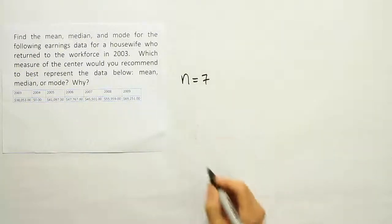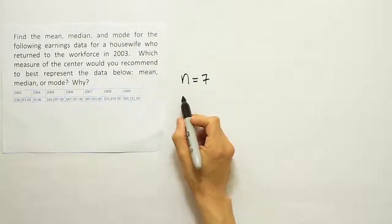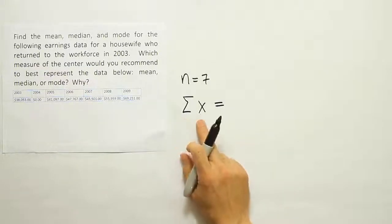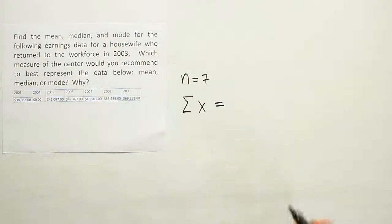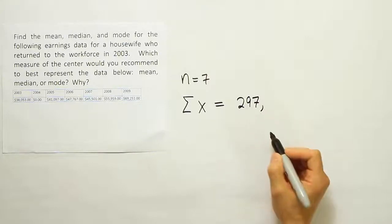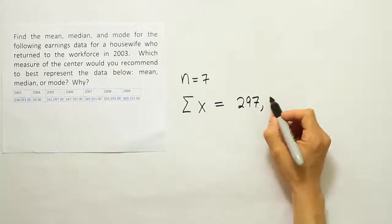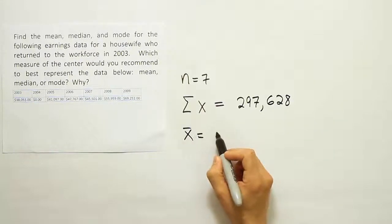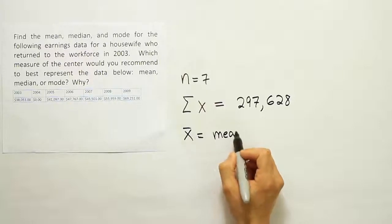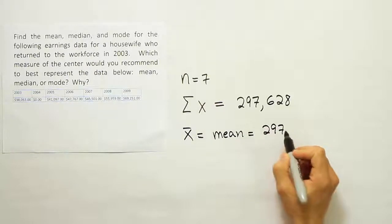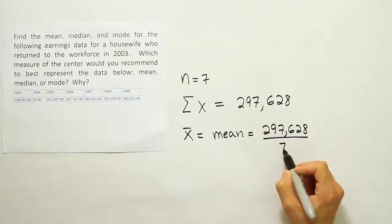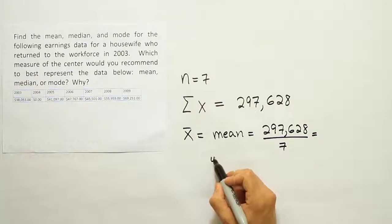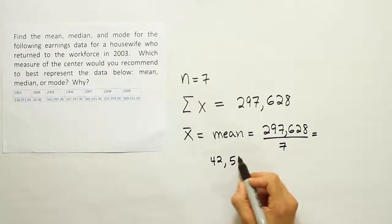n equals 7. Now to save a little time on this problem, I've gone ahead and added up all these values, so the sum of those X values turns out to be 297,628. To calculate x̄, which is the sample mean, we're going to take 297,628 and divide by 7. When we're finished with that, we end up with $42,518.29.